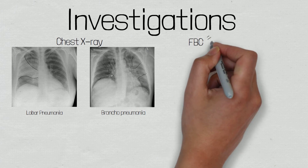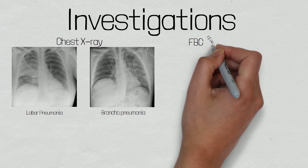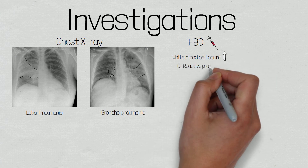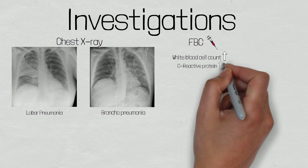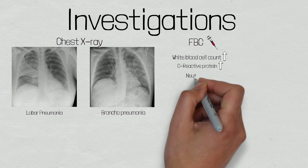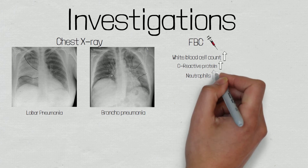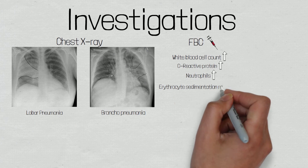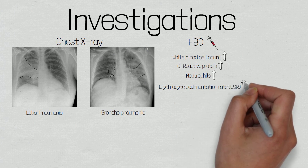A full blood count will usually show an elevated white blood cell count. However, it may be normal in those who are immunocompromised or who have an overwhelming infection. C-reactive protein is an acute phase response protein which is released in the presence of microbial infections or cell necrosis. This will be raised in response to infection and will be significantly raised in the presence of a bacterial infection, so this may help guide management. Viral infections will cause a much more moderate rise in CRP. If the CRP is less than 40, you may need to reconsider the diagnosis. A full blood count may also show neutrophilia — a high neutrophil count — which is also indicative of a bacterial infection. An increase in the erythrocyte sedimentation rate (ESR) may also be present; however, this is a non-specific sign of inflammation and may be raised due to other factors such as comorbidities.